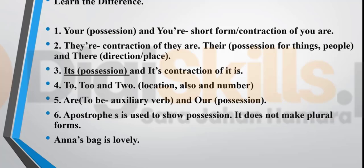Apostrophe S is used to show possession — it does not make plural forms. Please stop writing apostrophe S with plural forms, because that is not how plurals are formed. When we make plurals, we never add apostrophe S. For example, 'Anna's bag is lovely' — here apostrophe S on a noun shows possession, meaning this bag belongs to Anna.